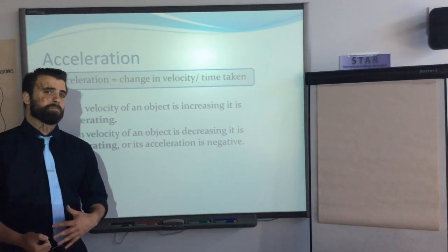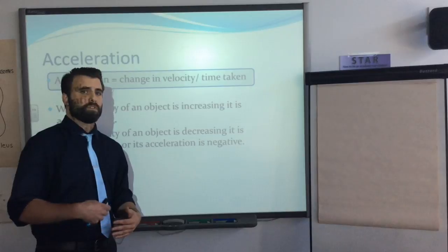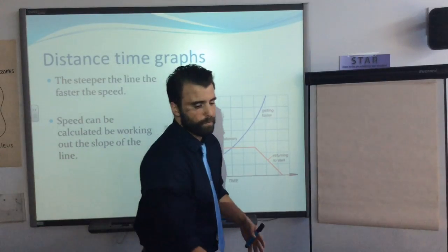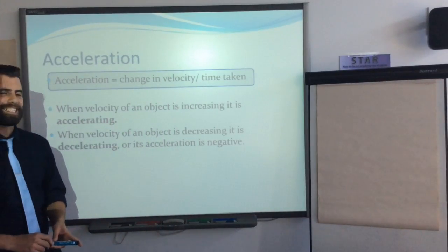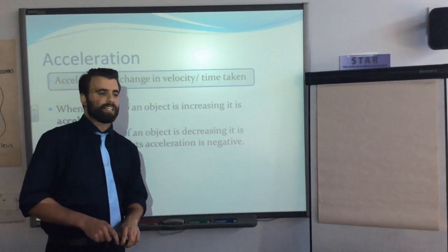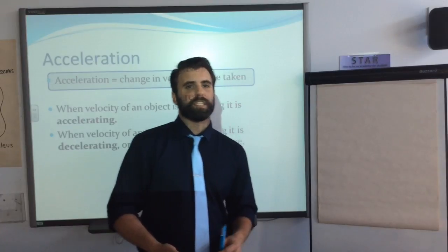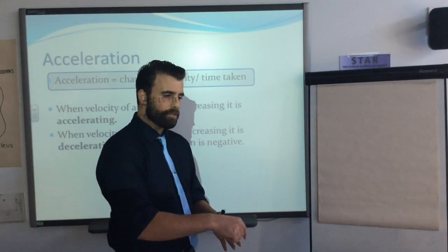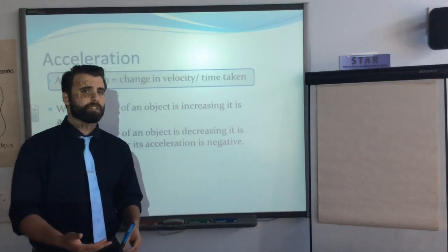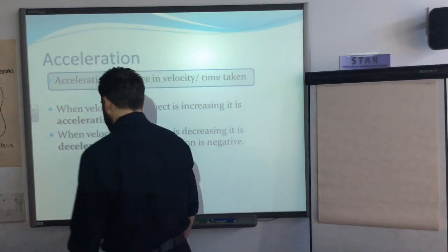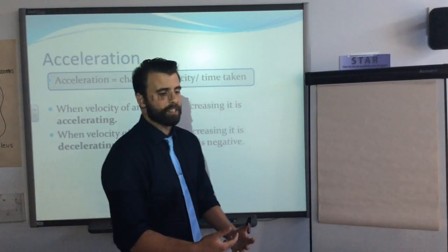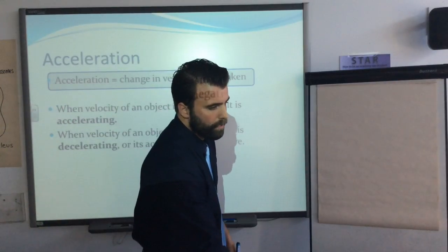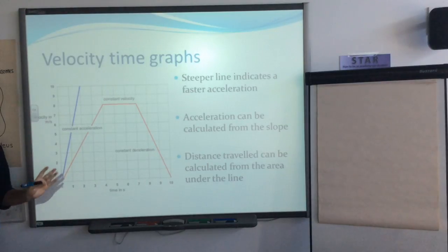Acceleration equals the change in velocity over the time taken. When velocity is increasing, the object is accelerating; when decreasing, it's decelerating — or the acceleration is negative. Importantly, an object can remain at constant speed but still be accelerating if it changes direction. For example, walking in a circle at the same speed is still acceleration, because velocity is speed with a direction — change either one and you're accelerating.